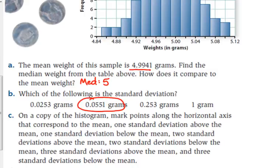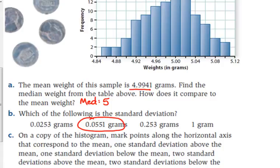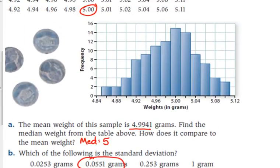So it says on a copy of the histogram, which you have right there, mark points along the horizontal axis that correspond to the mean, one standard deviation above the mean, one standard deviation below the mean, two above, two below, three above, and three below. So let's go ahead and do that on everybody's paper here. So the mean is just, it's really, really close there to the five. That's our mean.